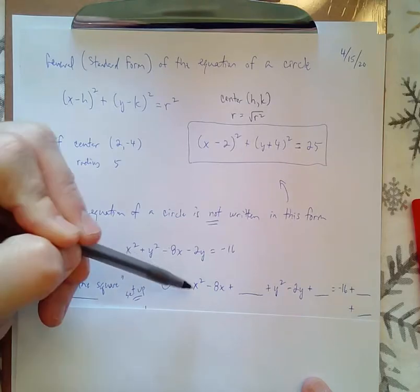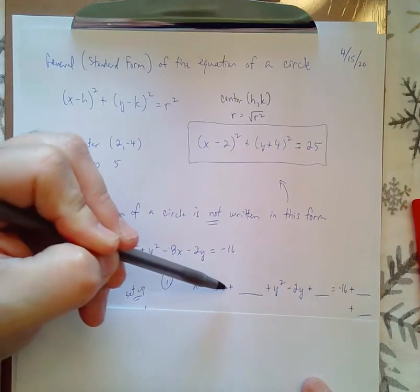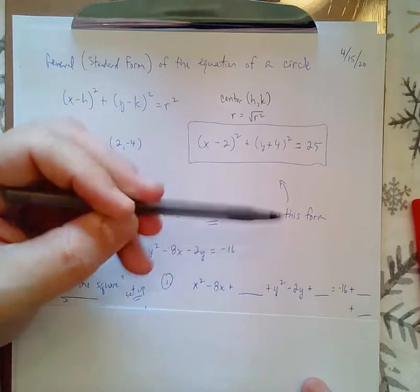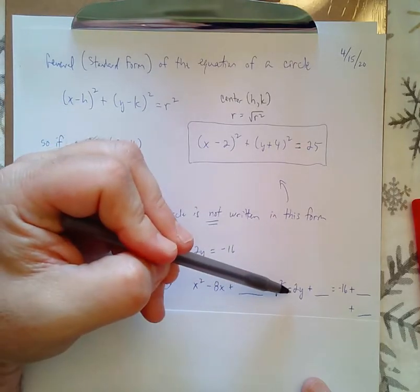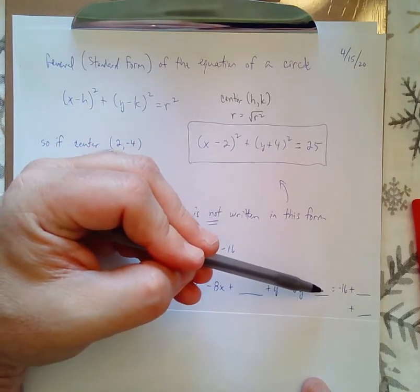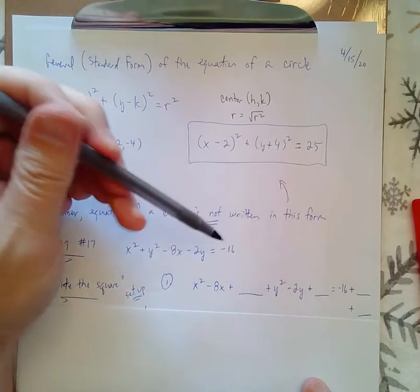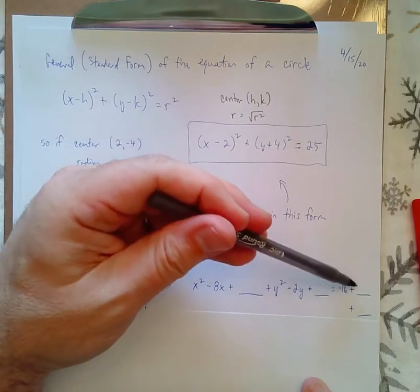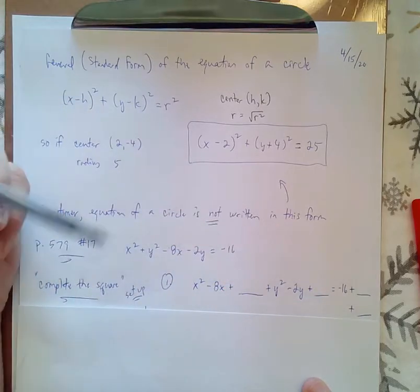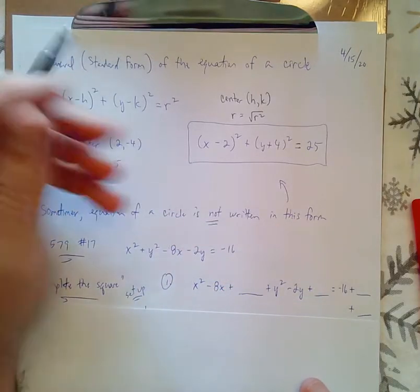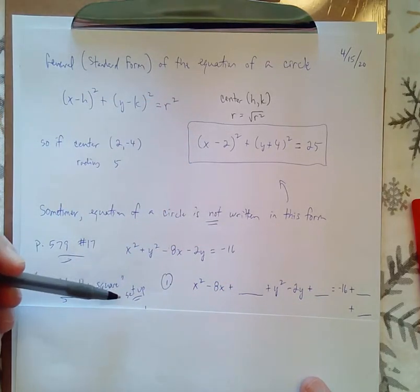The setup is I'm going to put the x's together. So, the x squared and then the minus 8x, and I'm going to have a little space, and then the y squared minus the 2y with a little space, and then the number -16 is already over there, and I'm going to add two spaces to the right side of the equation. So, that's my setup. That's my step one.